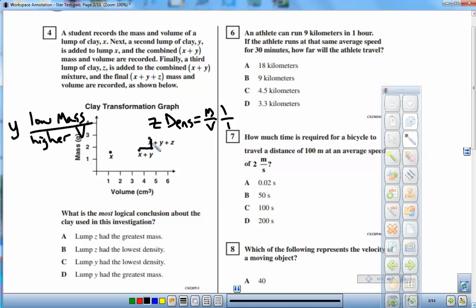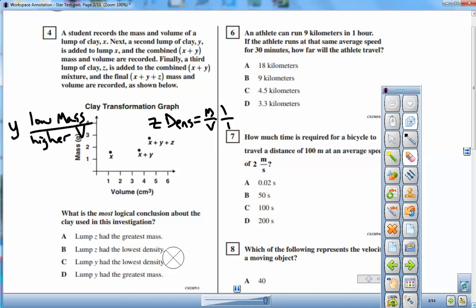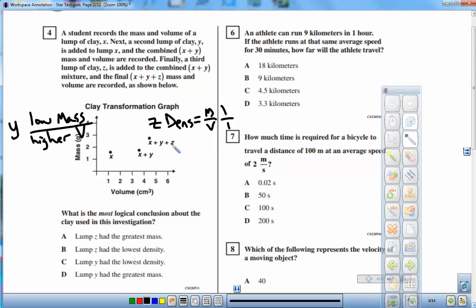So regardless of the number for z's density, the important thing is just looking at these possible answers and figuring out which could possibly be true. Well, lump z has the greatest mass. If it had the greatest mass, if letter a were true, then adding z would mean this point would be much higher because here we are adding x. Oh, well, that's about one and a half grams. If we were to add y, that's a tiny bit.